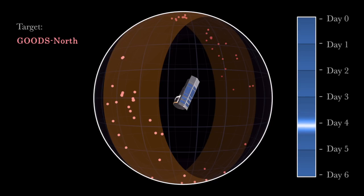Spitzer must constantly keep its sunshield and solar panels facing the Sun to stay cooled down and powered up, so it can only pivot around its axis.